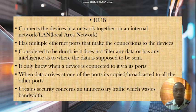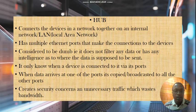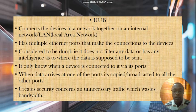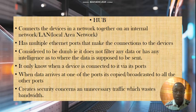We're going to start with the hub. The hub basically connects devices in a network together — in an internal network, that is a local area network. It has multiple ports that make connections to these devices and it is considered to be dumb, meaning it does not filter any data or have any intelligence as to where data is supposed to be sent. A hub only knows when a device is connected to its port, and if that device sends traffic, it is broadcasted or copied to all other ports.